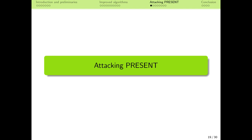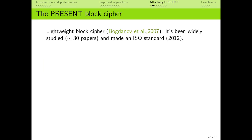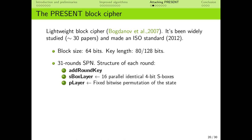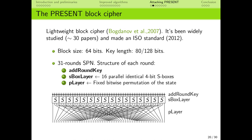We have now reached the last part of the presentation, where we give a short overview of our attacks on the block cipher PRESENT. PRESENT is a lightweight block cipher which was made an ISO standard in 2012, with a 64-bit block and 80 or 128-bit keys. It consists of 31 rounds with the following steps: first, the XOR addition of the round subkey; then the application of 16 identical 4-bit S-boxes; and finally a fixed-bit permutation of the state.